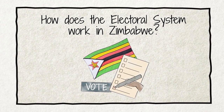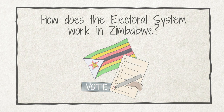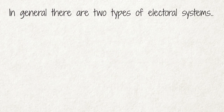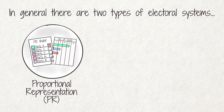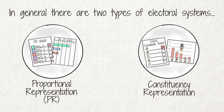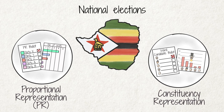In this video, we explain how our votes translate into seats in Parliament, Provincial and Metropolitan Council, or in a Municipal Council in Zimbabwe. In general, there are two types of electoral systems: Proportional Representation, or PR System, and Constituency Representation System. Both systems have advantages and disadvantages. In Zimbabwe, we use both the Constituency Representation System and the PR System for national elections.